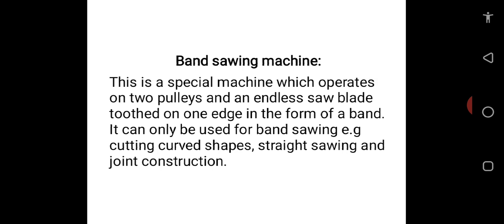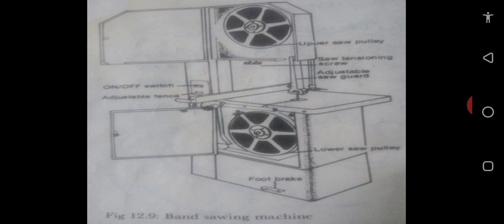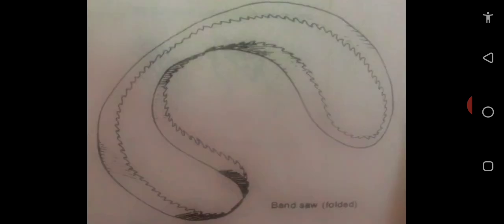The next sawing machine under sawing operation is the band sawing machine. This is a special machine which operates on two pulleys and an endless saw blade, with teeth on one edge, in the form of a band. It can only be used for band sawing, for example, cutting curved shapes, straight sawing, and joint construction. The diagram of the band sawing machine and band saws are shown in the diagrams.